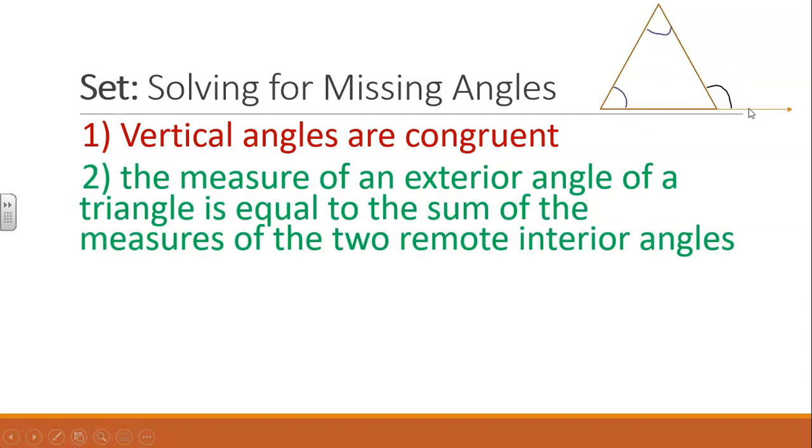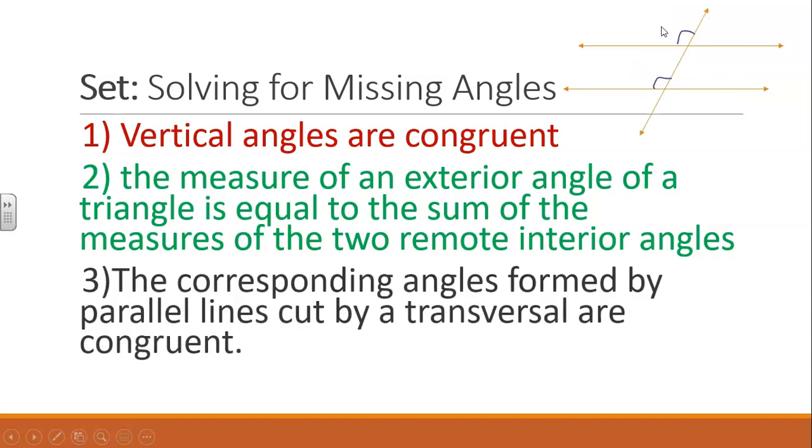The measure of the exterior angle of a triangle is equal to the sum of the two remote interior angles. Corresponding angles formed by parallel lines cut by a transversal are congruent.